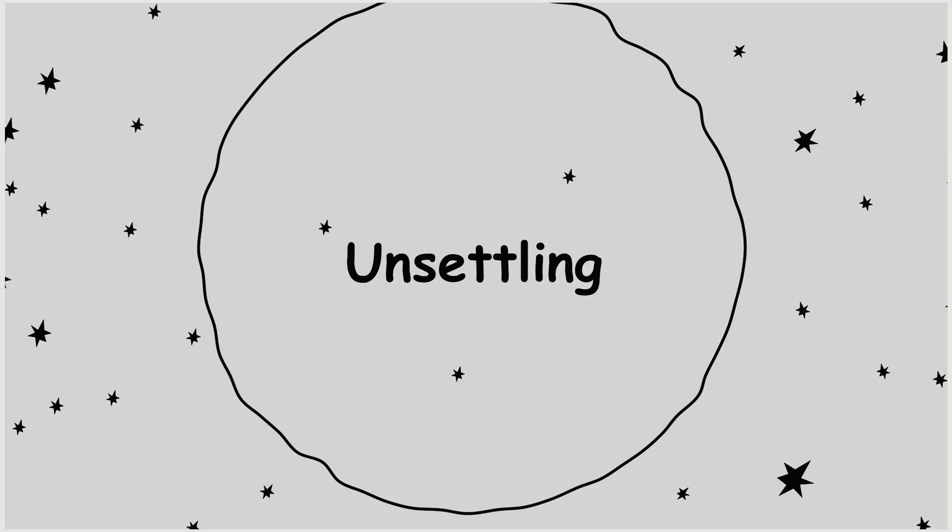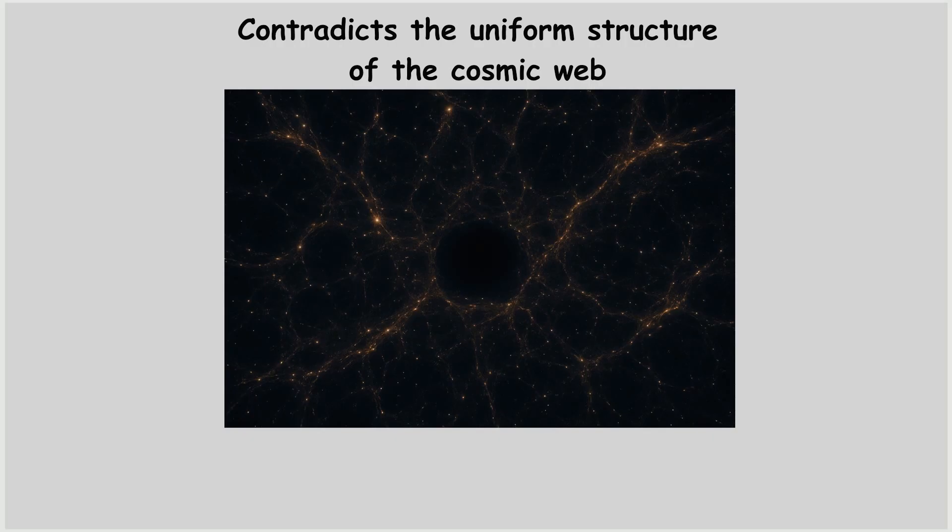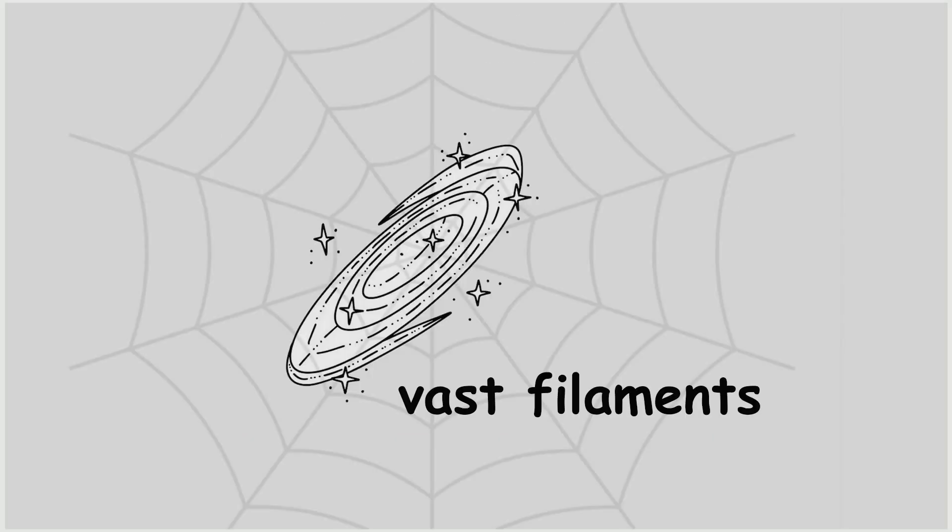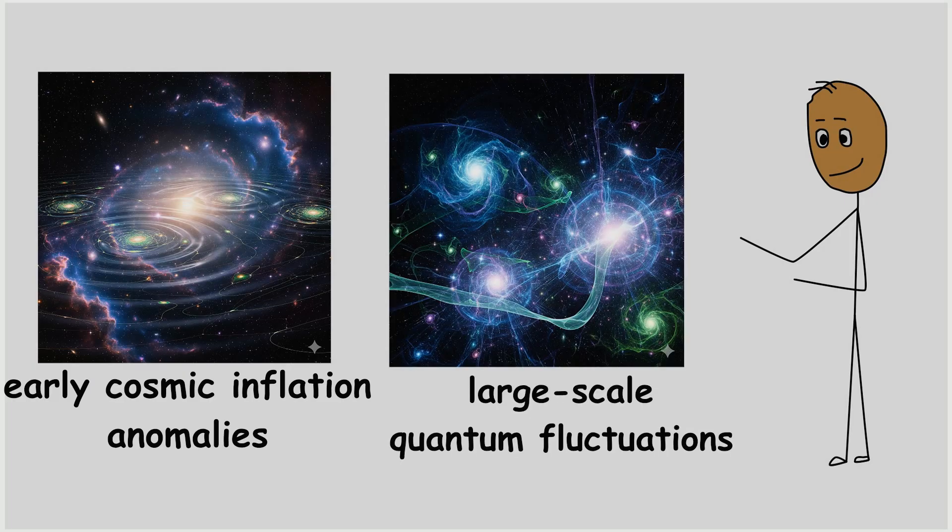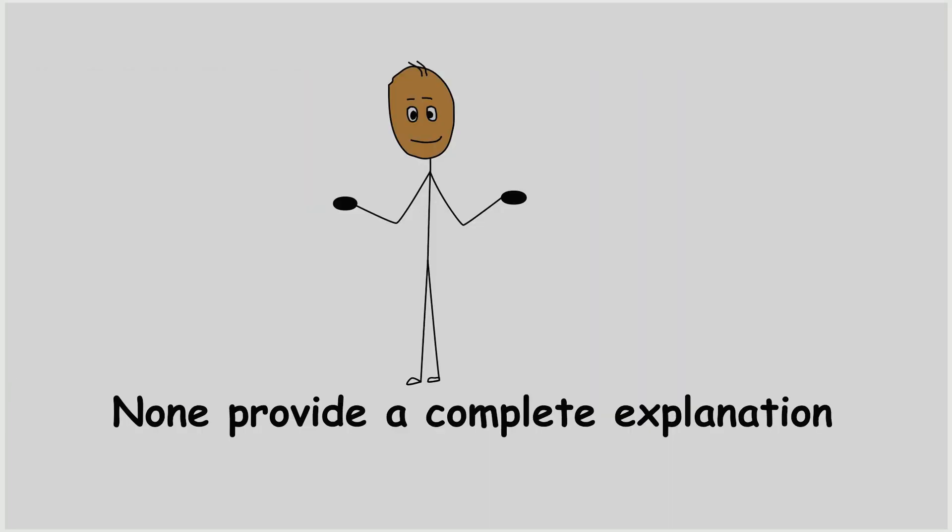The emptiness of the void is unsettling because it contradicts the otherwise relatively uniform structure of the cosmic web, where galaxies form vast filaments and clusters interwoven with dark matter. Theories for its origin include early cosmic inflation anomalies or large-scale quantum fluctuations, but none provide a complete explanation.